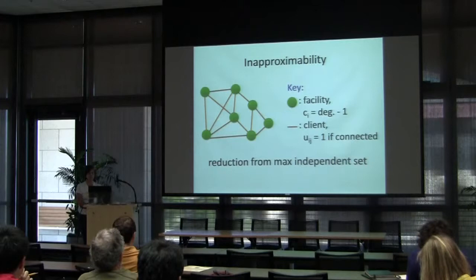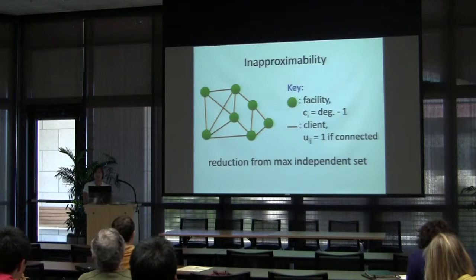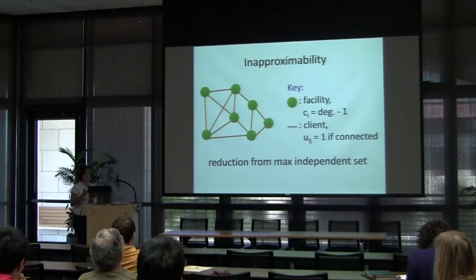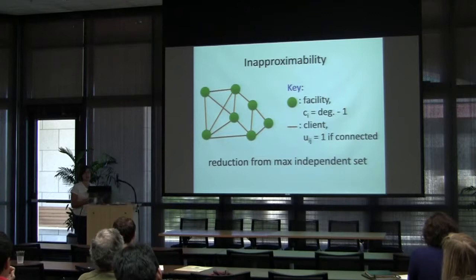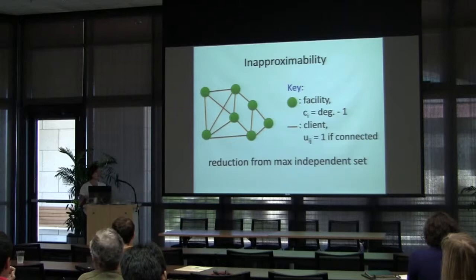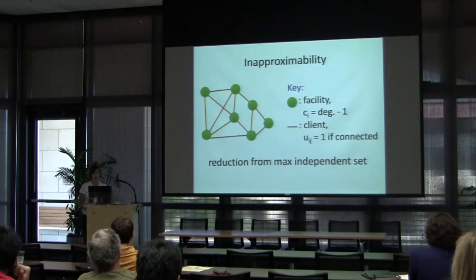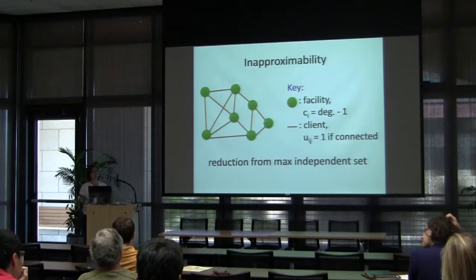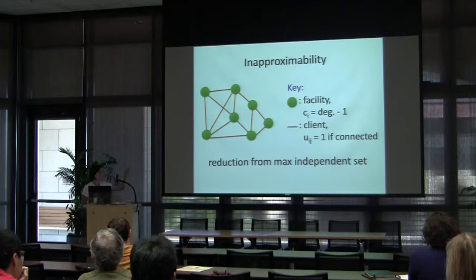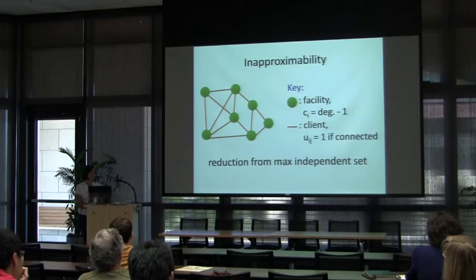This problem is not surprisingly inapproximable. You can reduce maximum independent set to maximum facility location: take vertices as facilities and edges as clients. The opening cost of a facility is its degree minus one, and the revenue of a client is one if connected to either endpoint, zero otherwise. Any solution where we don't open zero-revenue facilities will have value exactly equal to the cardinality of the corresponding independent set, so the problem is inapproximable.